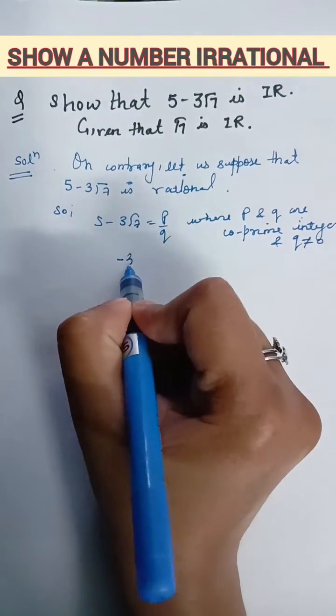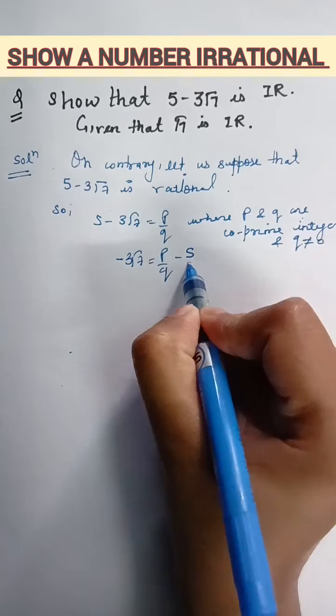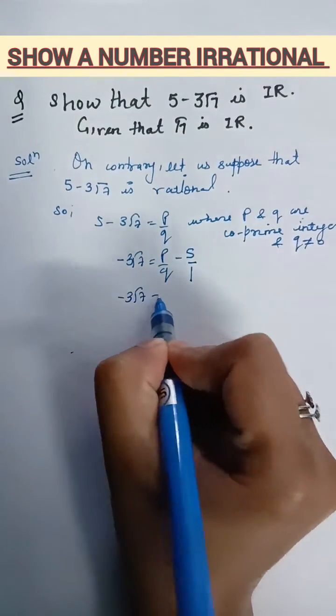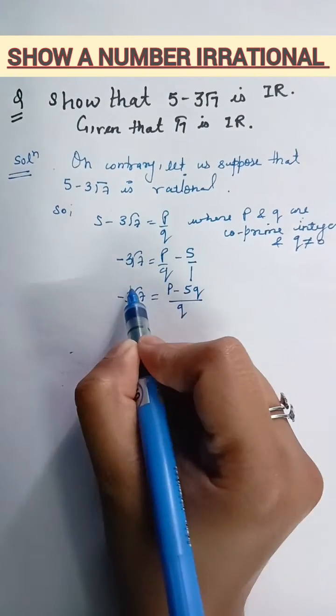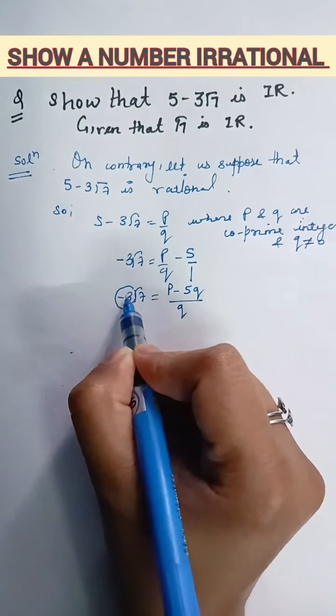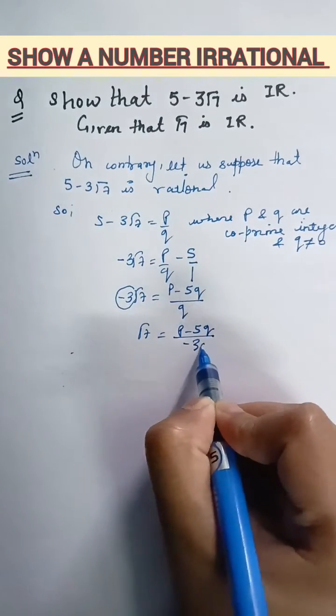So, we have to shift all the numbers without root to right side. We are just shifting p by q as it is and plus 5 to minus 5. I will take LCM upon 1. So, minus 3 root 7 equal, cross multiply q times 1, then p minus 5q. Afterwards, minus 3 is in multiplication with root 7, it will go down. So, root 7 equal p minus 5q upon minus 3q.